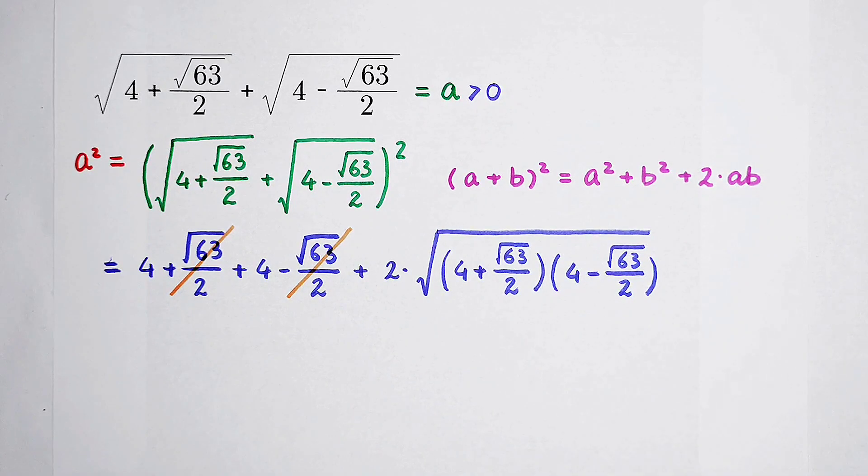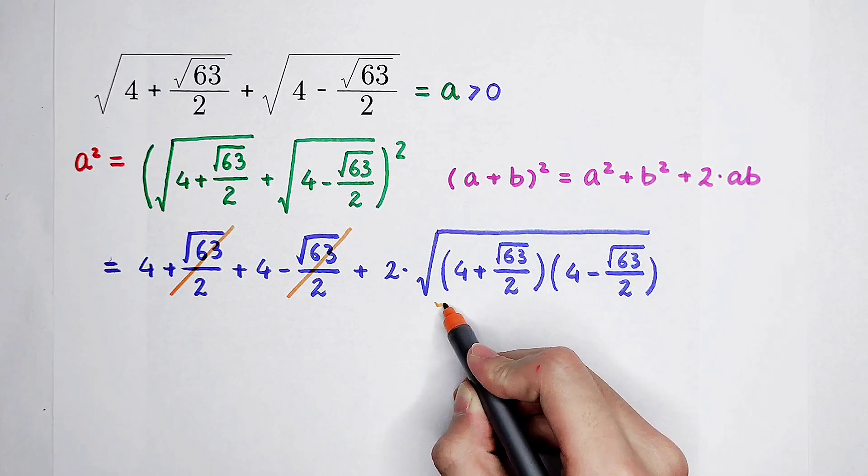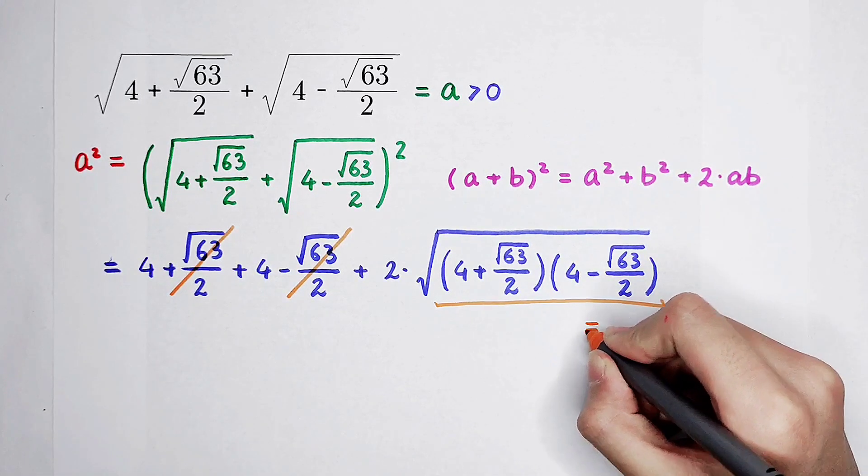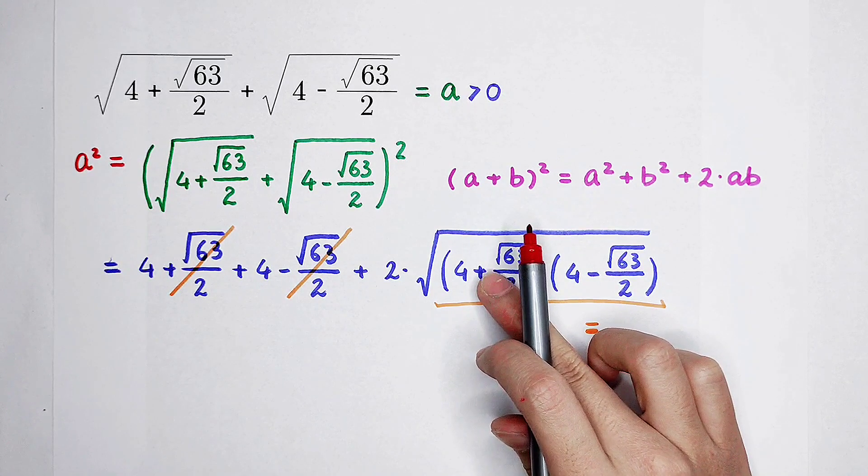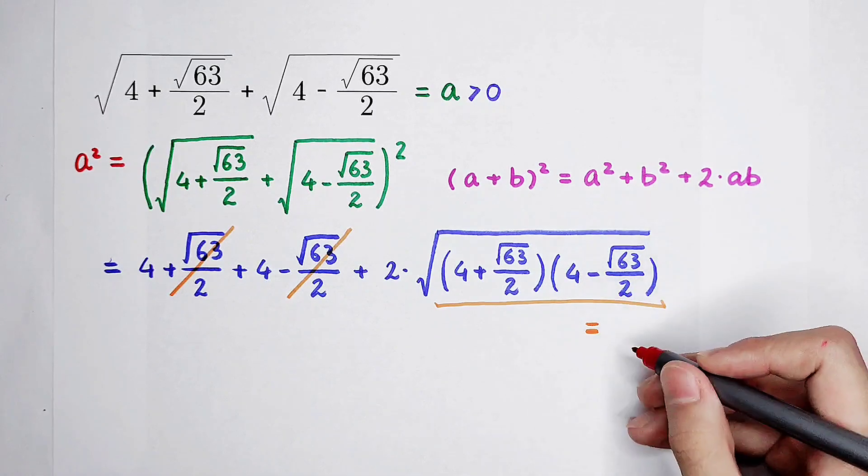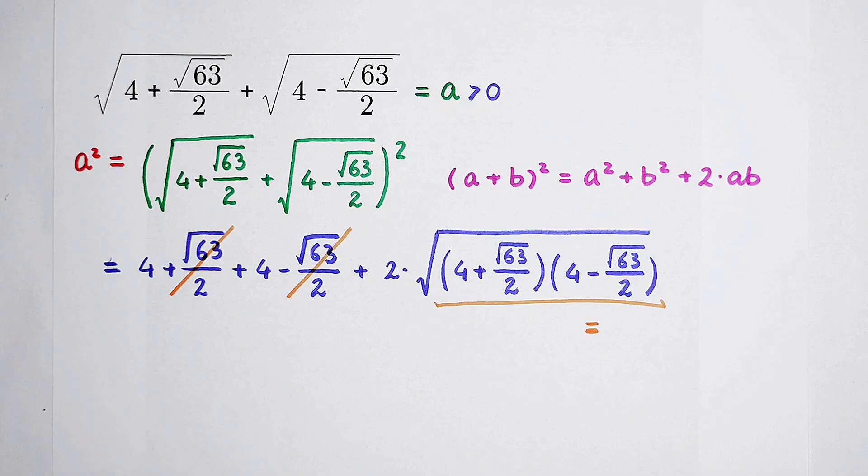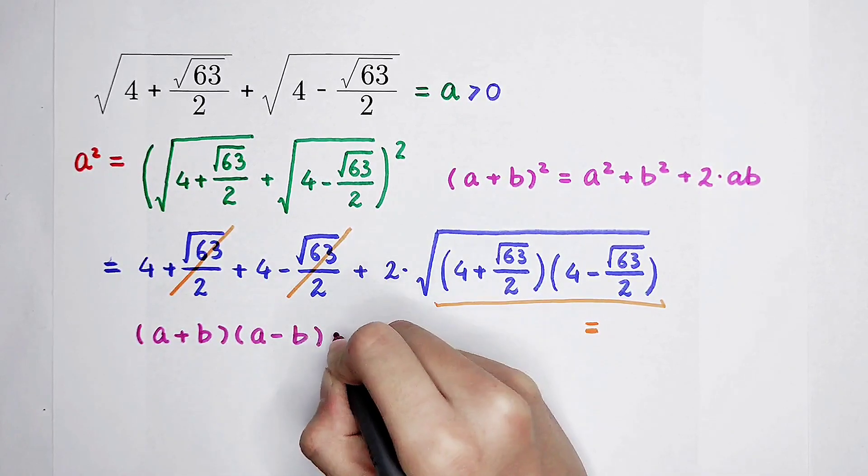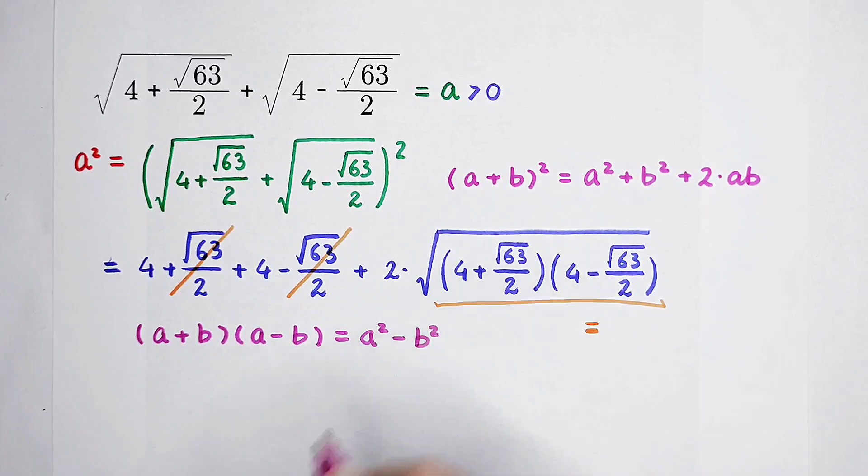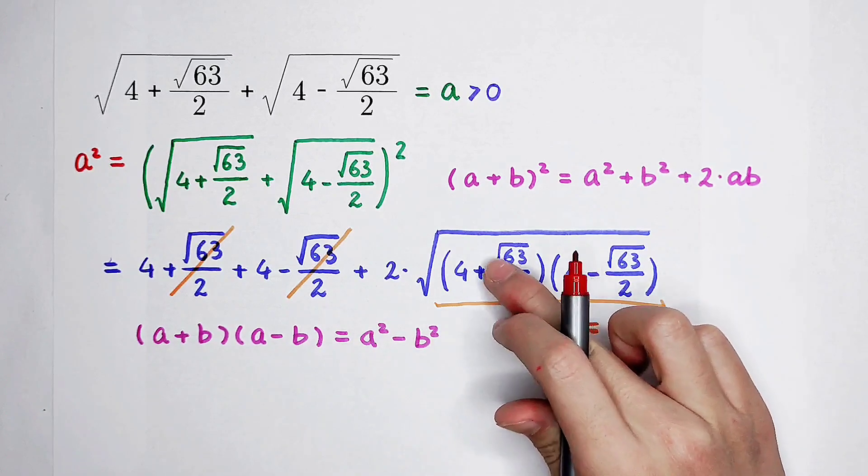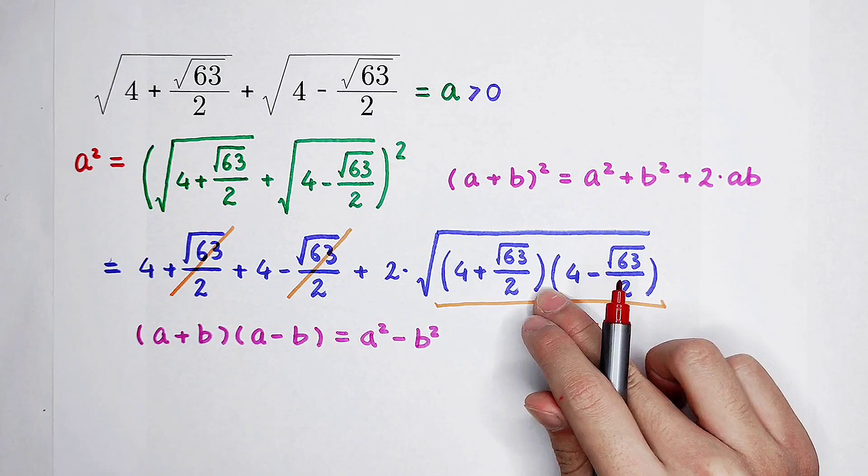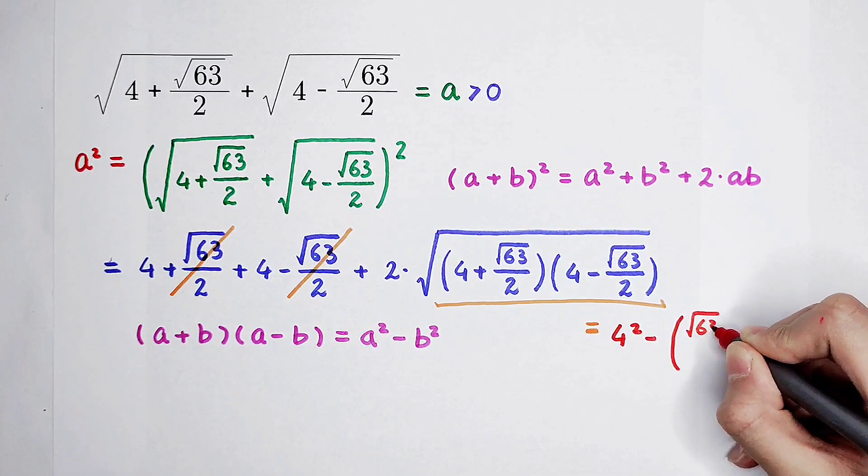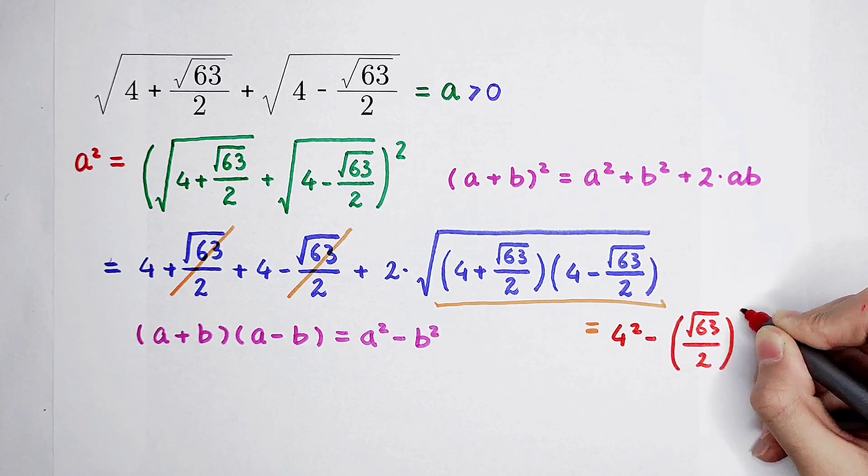This is the problem. If we want to calculate the result of this number, we have to first calculate this number which is under the square root. It is equal to 4 plus square root of 63 divided by 2, and then times 4 minus square root of 63 divided by 2. So, we have to use another formula. And this formula is a plus b times a minus b is a squared minus b squared. So, it is a is 4, b is square root of 63 divided by 2, and then substitute it in: 4 squared, and then minus b squared, which is square root of 63 divided by 2. Okay. All squared.